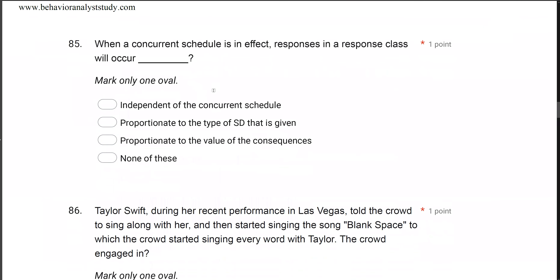Question 85: When a concurrent schedule is in effect, responses in a response class will occur when? A concurrent schedule involves two schedules running simultaneously for multiple behaviors, associated with matching law and choice. The question is essentially asking what matching law says about responses in a response class. Answer A — independent of the concurrent schedule — is wrong, because those schedules are mediating, maintaining, and evoking these responses.